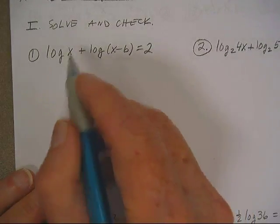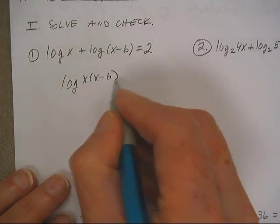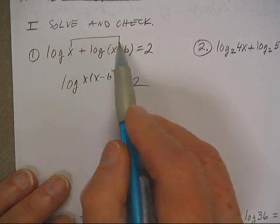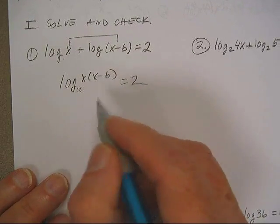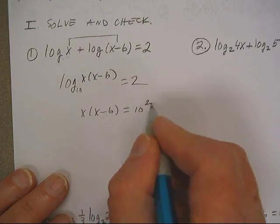All right, then here I've got, when you see the plus sign, you know you have to multiply those two together, this one and this one. Then the base here is 10.